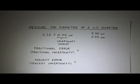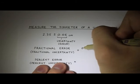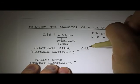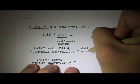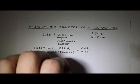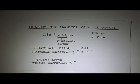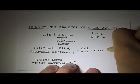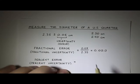So in this case, my fractional error would be 0.05, that's the actual uncertainty, divided by the measurement itself, 2.35. And so this is something you can do on the calculator. And so when I type it in here, I get 0.0213. So 0.0213.